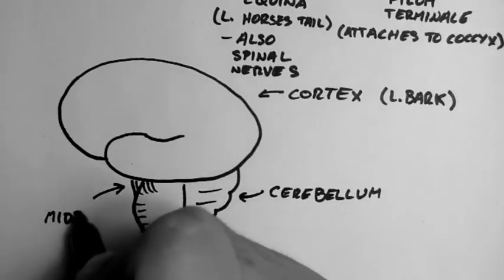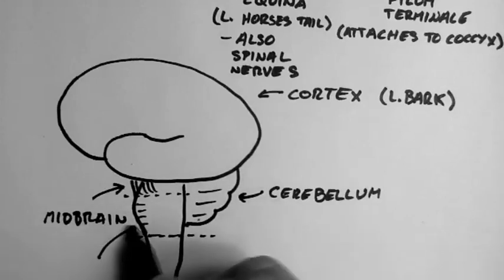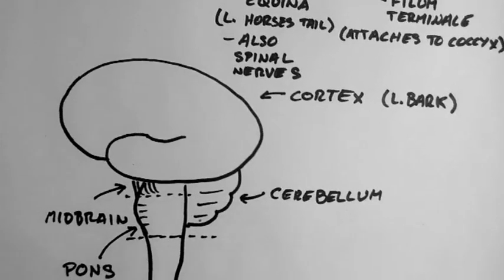The first part of the brainstem is the midbrain. Then under the midbrain is the pons.